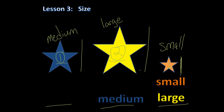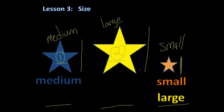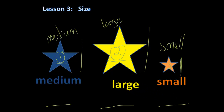Indeed, the third object is the small object. The first object is the medium object — we're right on both of those. And object two is the large object.